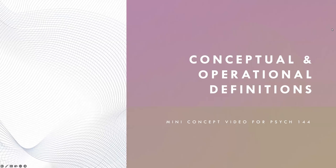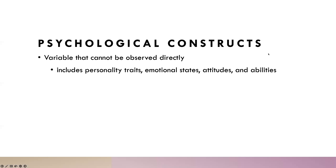This video reviews conceptual and operational definitions and gives you an example. We're talking about psychological constructs — we don't have ways that we can directly measure things like personality traits, attitudes, and emotional states. If I say that I want to measure how happy you are today, I need to define how I do that. We're going to start with a conceptual definition and then use that to make an operational definition.